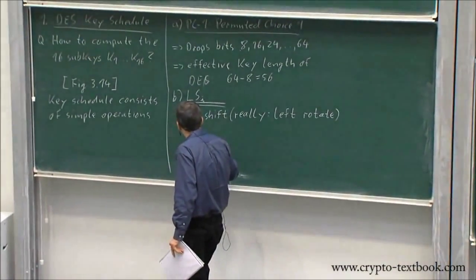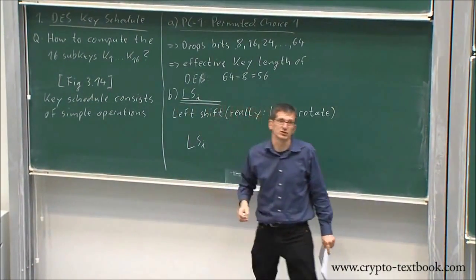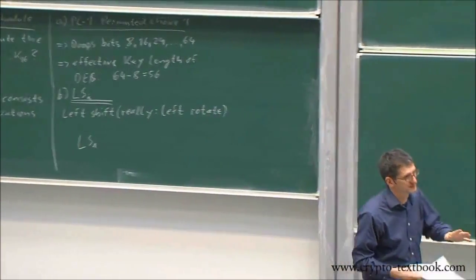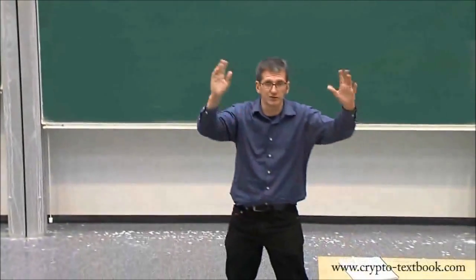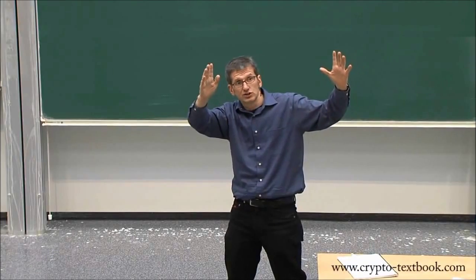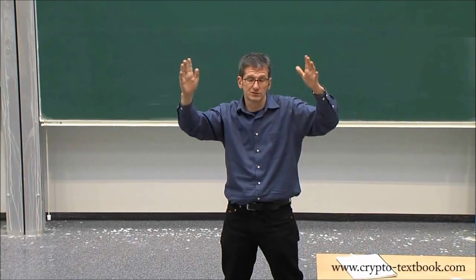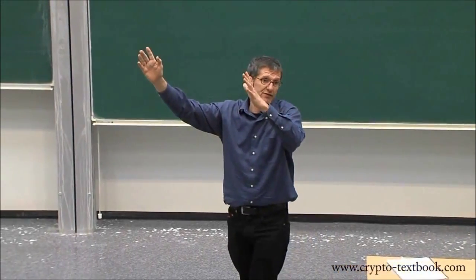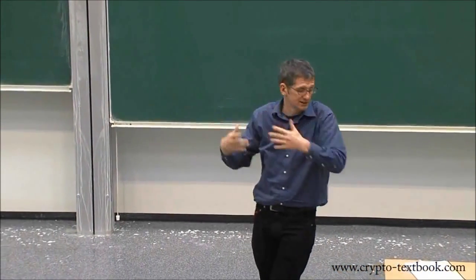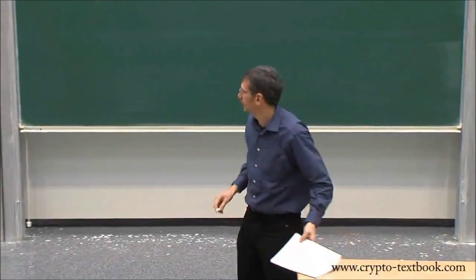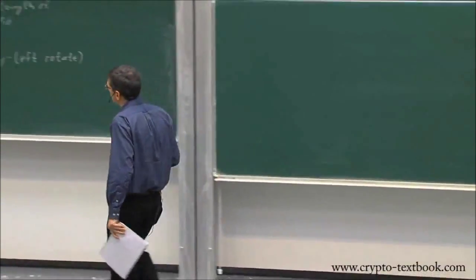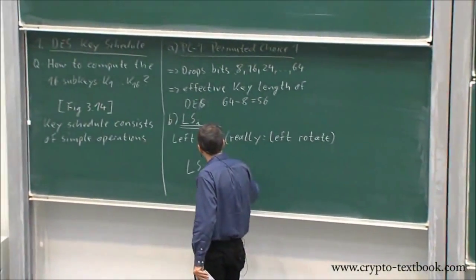And it's very specific by how many positions you shift. You have bits of 28 bits length, and you shift them to the left. Now the big question is, do we shift by one position, two positions, three positions, four positions, up to 27 positions? And this is very specific—namely, LSI does the following number of shifts.